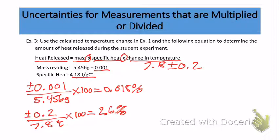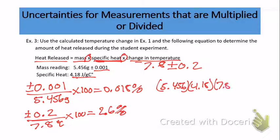Now we plug our numbers into the equation: mass of 5.456 grams multiplied by specific heat of 4.18 multiplied by the change in temperature of 7.8. When we multiply those values, we end up with a final value to the correct number of significant figures of 1.8 times 10 to the second joules — this is our final heat value released.